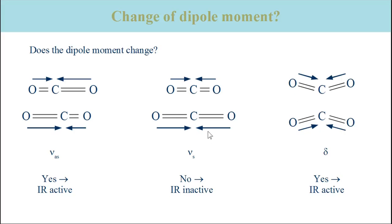In the bending vibration, the magnitude of the dipole moments does not change but their directions do. This gives a total dipole moment that points downwards in the top structure and one that points upwards in the bottom structure. Therefore, the dipole moment changes with the vibration and the vibration is infrared active. It absorbs at 667 reciprocal centimeters.